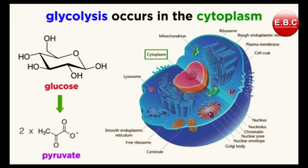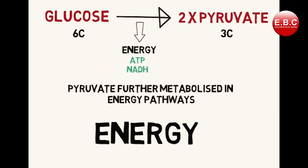First, we will have an overview, and then we will study the reactions involved. In glycolysis, one molecule of glucose, which is a six-carbon compound, is broken down into two molecules of pyruvate, which is a three-carbon compound. In this conversion, energy is released in the form of ATP and NADH, which produces more energy.